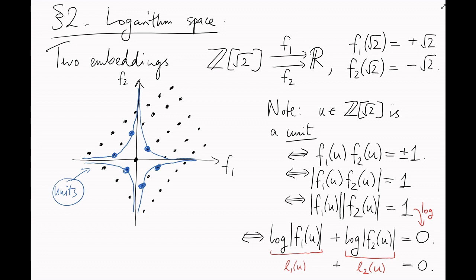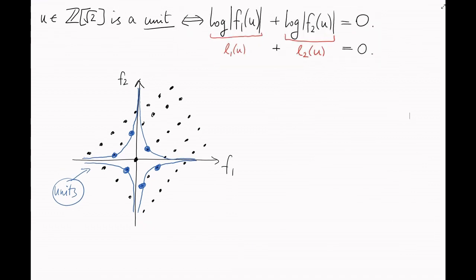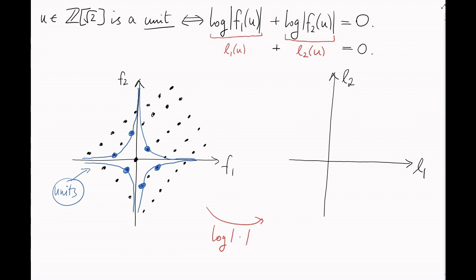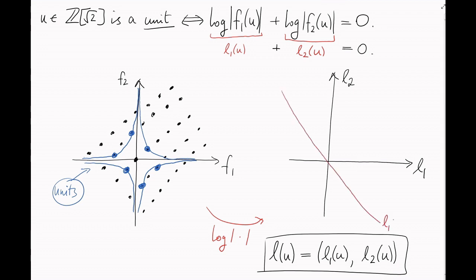Let's do what we did before and try to draw this space. Here's an L1 axis. Here's an L2 axis. And for every unit u in our lattice, let's write L of u for the point with coordinates L1 of u comma L2 of u.